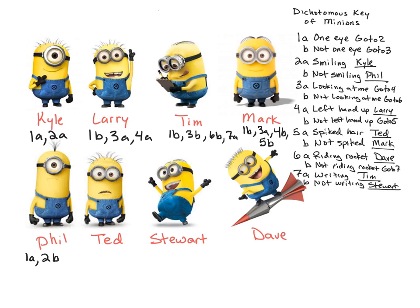Ted. Let's look at Ted. Ted has two eyes, so that'll be one B — go to three. He is looking at me, so that'll be three A — go to four. His left hand is not up, so that'll be four B — go to five. Five A says spiked hair — and there's Ted. Stuart has two eyes, so that'll be one B — go to three. He is not looking at me, so that'll be three B — go to six. He is not riding on a rocket, so that'll be six B — go to seven. And he is not writing, so that'll be seven B.